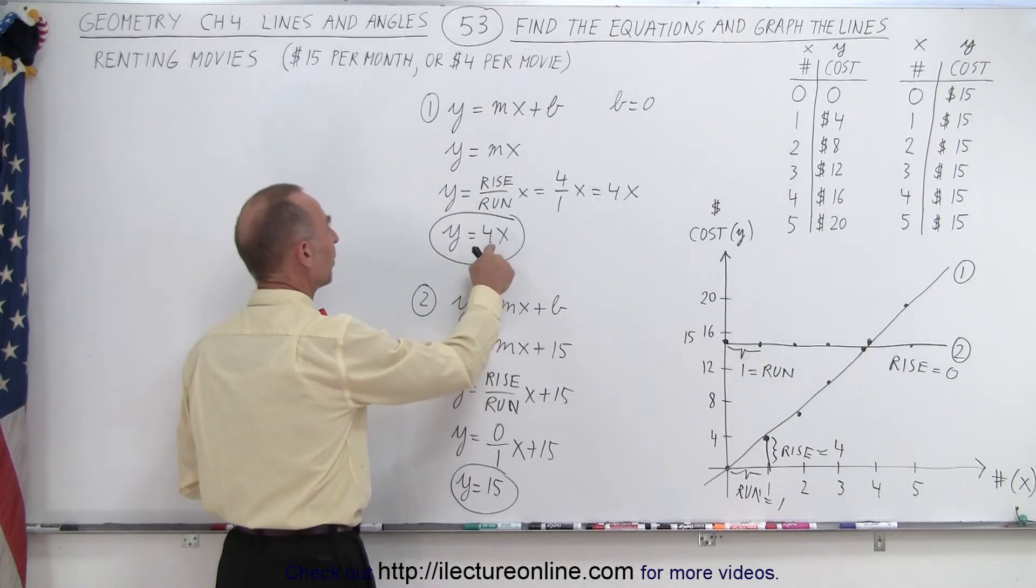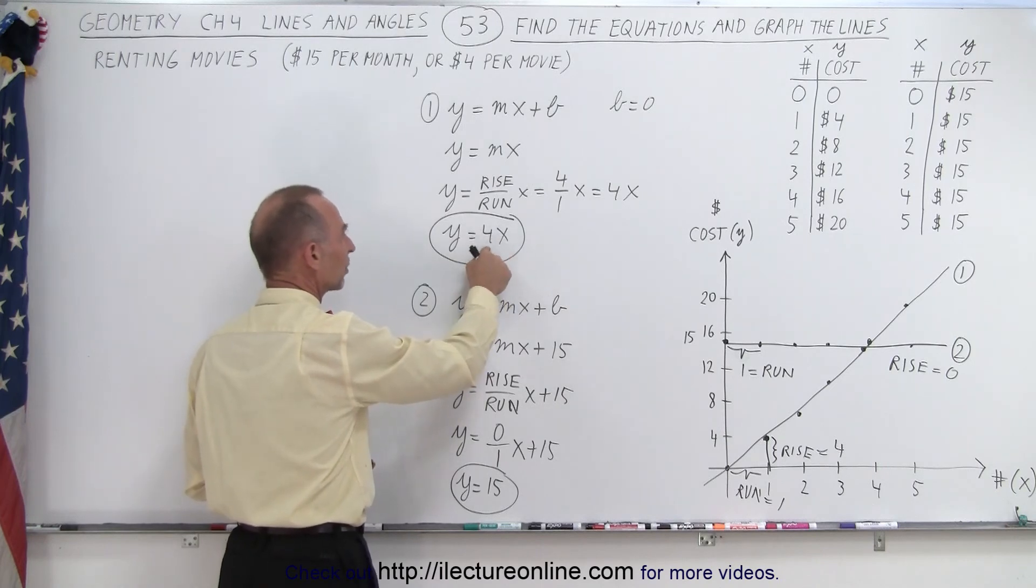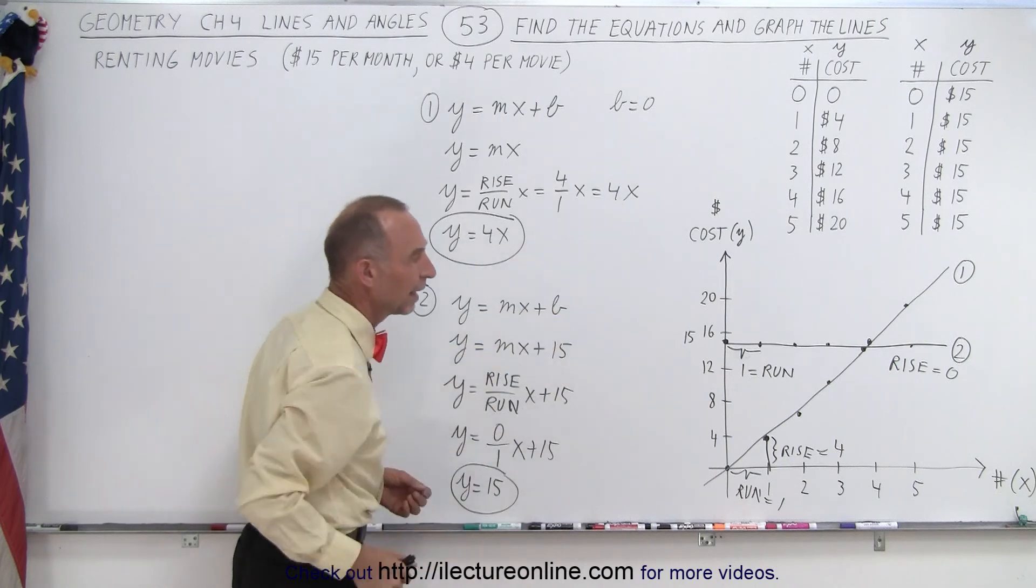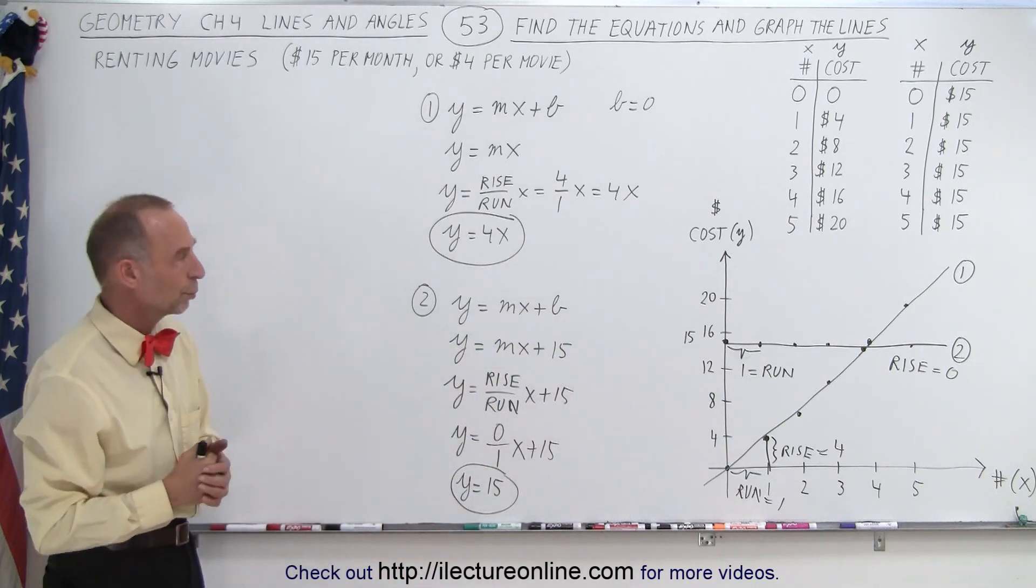And here, I'll pay four dollars for every value of x, four times one, four times two, four times three, four, eight, twelve dollars, and so forth, as you rent more and more movies.